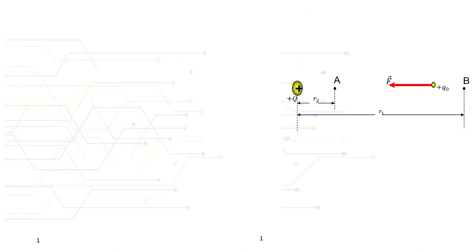Let's say we have a positive point charge and there are points A and B in the electric field. Since point A is closer to the positive point charge compared with point B, point A is expected to have a higher electric potential compared to point B. In other words, less work needs to be done on the charge to place it at point A compared with point B. This difference in energy required to place the test charge between points A and B is called the potential difference.